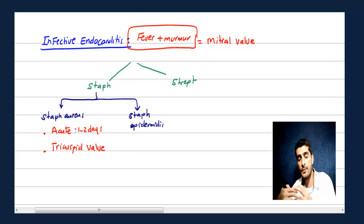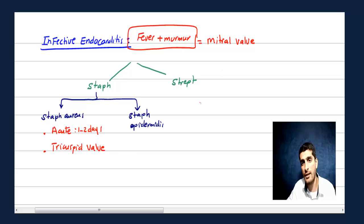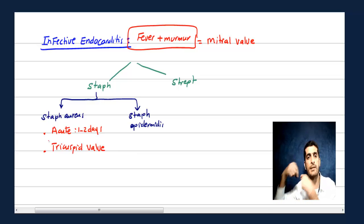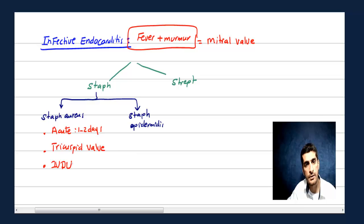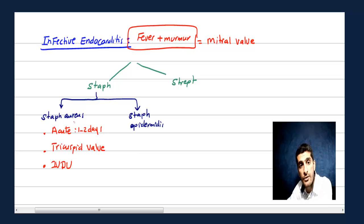When talking about tricuspid valve — it's on the right side of the heart — you're talking about right-sided endocarditis. Because it's right-sided, IV drug abusers are a big risk here, since the venous system goes to the right side first and the tricuspid valve. So IV drug abusers, tricuspid valve, acute presentation — that's basically Staph aureus.